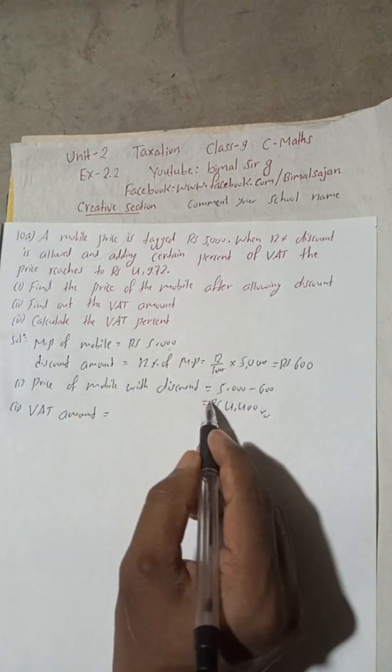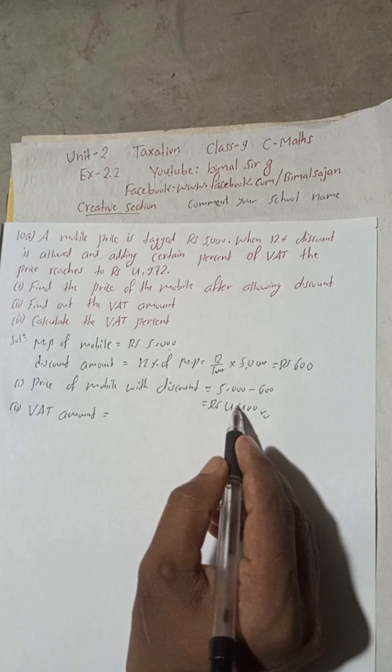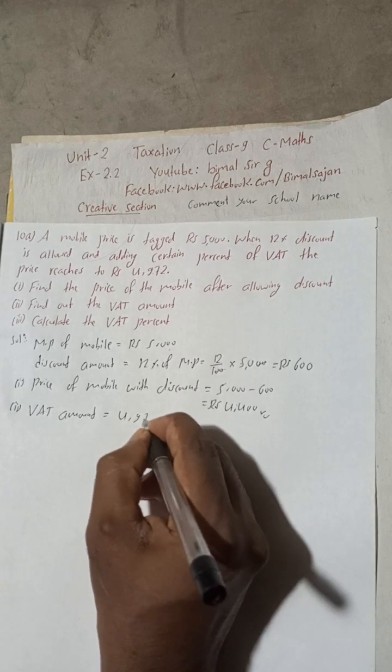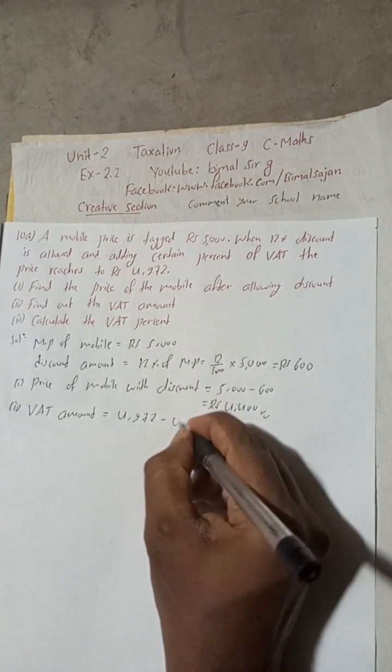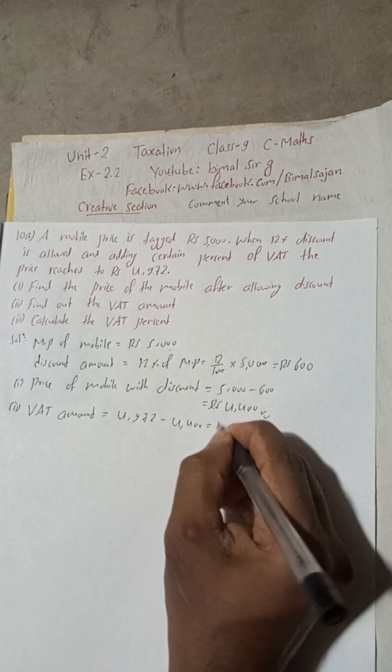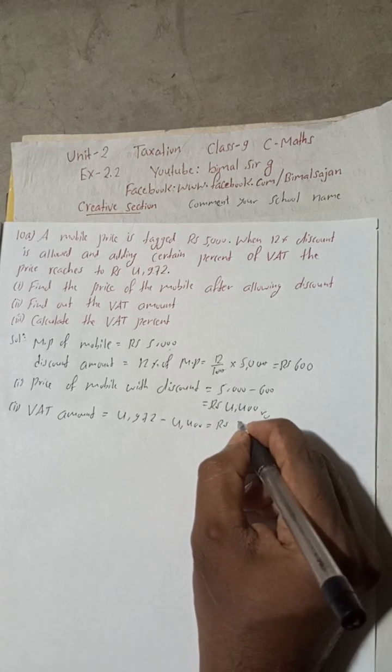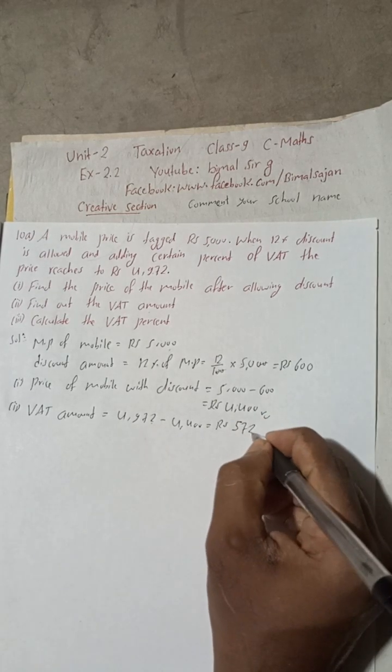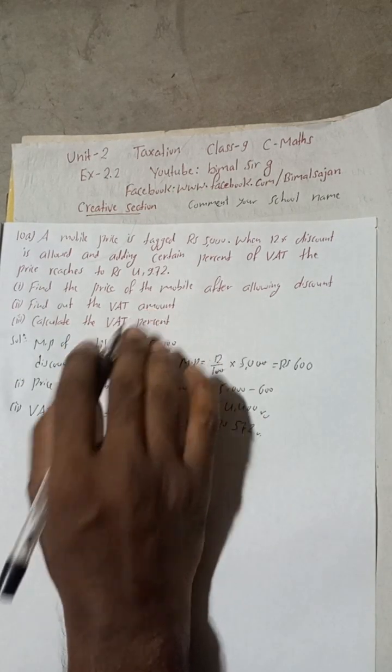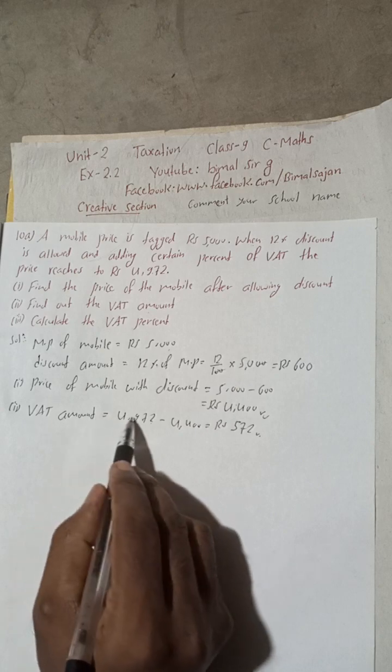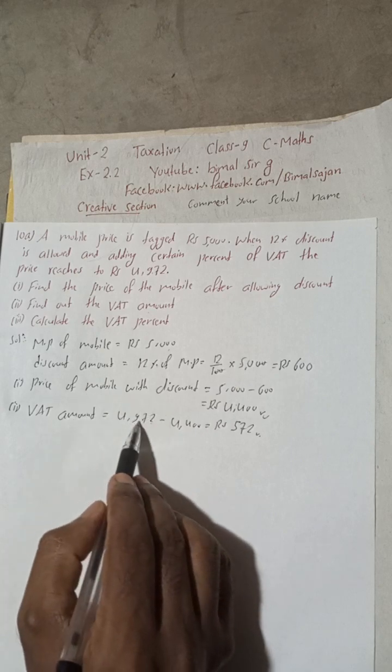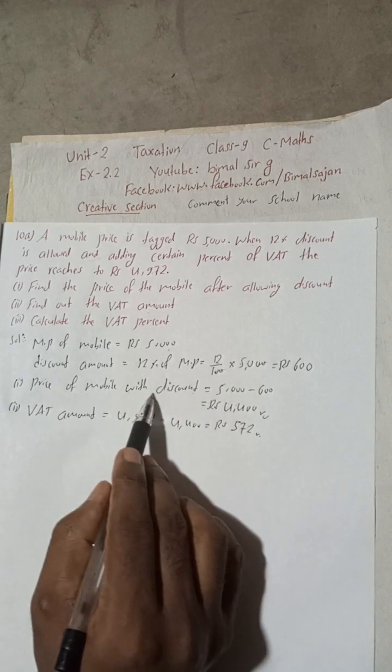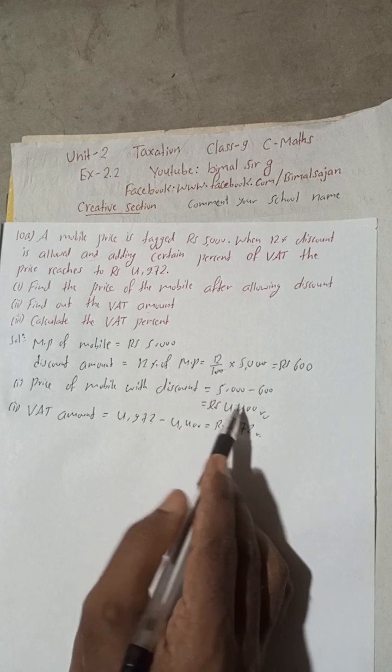Price without, this is the price without VAT. So now we can subtract this. Now we can subtract 4972 minus 4400. This is here Rs 572. 572 is the VAT amount. You can also write the formula here: VAT amount is equal to price with VAT minus price without VAT. And this is the price without VAT. Price of mobile with discount is the price without VAT.